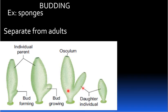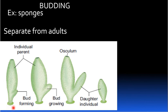Next, we are going to see about budding. The example for budding is sponges. In budding, the parent body produces one or more buds.